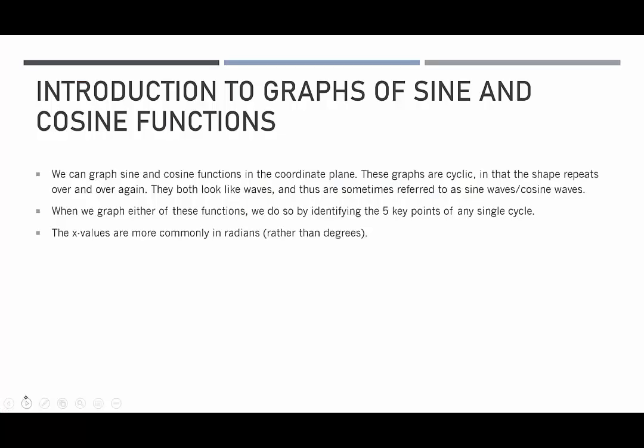A few things about the graphs of the sine and cosine functions. When we're talking about a graph, it's like taking the unit circle but then extending x so that we don't just go in circles. We'll actually continue to graph along the x-axis. When we graph sine and cosine graphs in the coordinate plane, these graphs are cyclic — that means the shape repeats over and over again. They both look like waves, and thus they're sometimes referred to as sine waves or cosine waves.